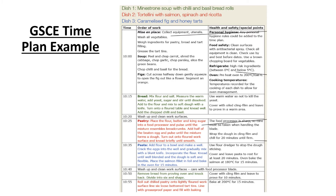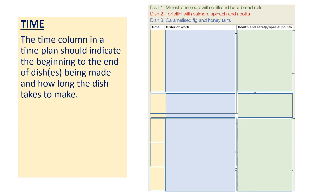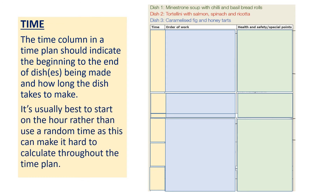This is a GCSE time plan example — what you'd be working towards in GCSE food and nutrition when you do your three-course meal. For the time column: it should indicate the beginning to the end of the dish and how long it takes to make. It's best to start on the hour rather than a random time. For example, this plan starts at 10:00, then goes to 10:15, 10:20, 10:25, 10:35 — it's simple and not going into, say, '10:48 and 3 seconds.'